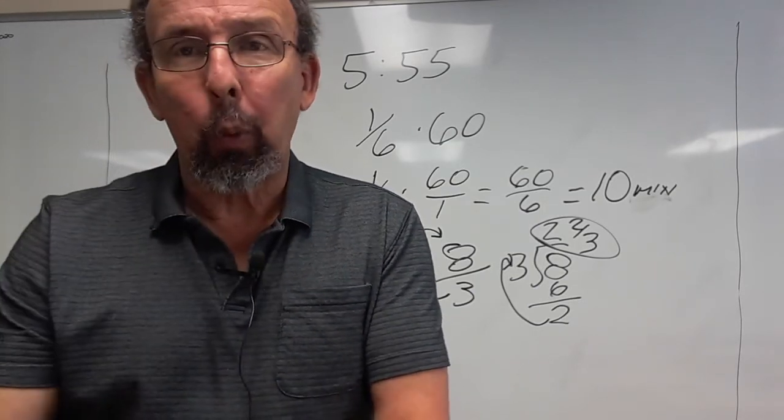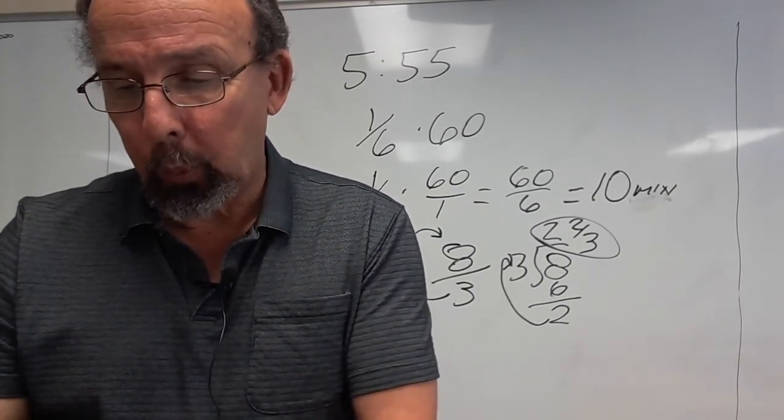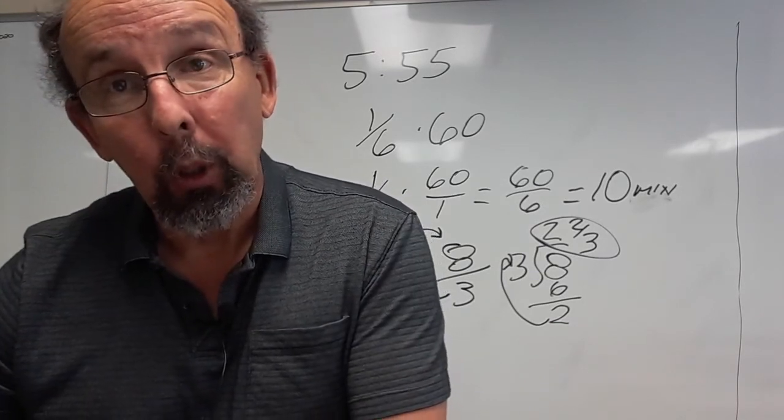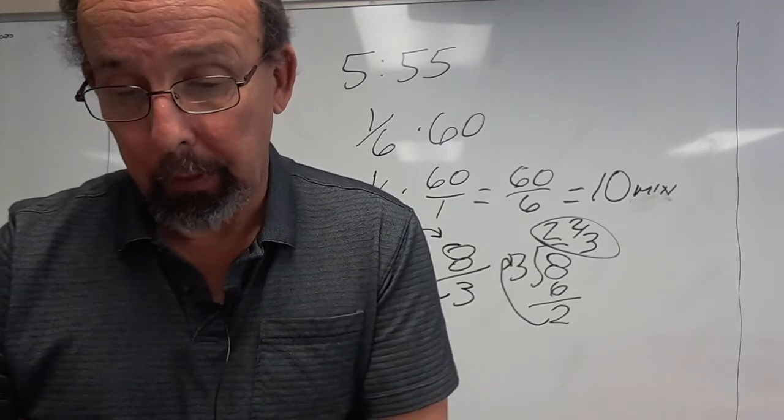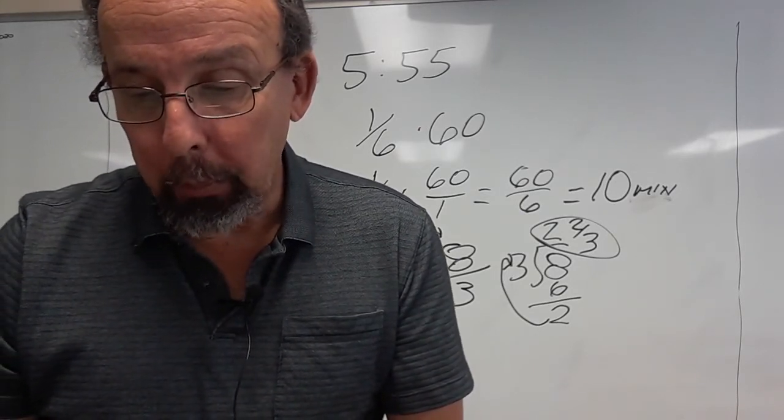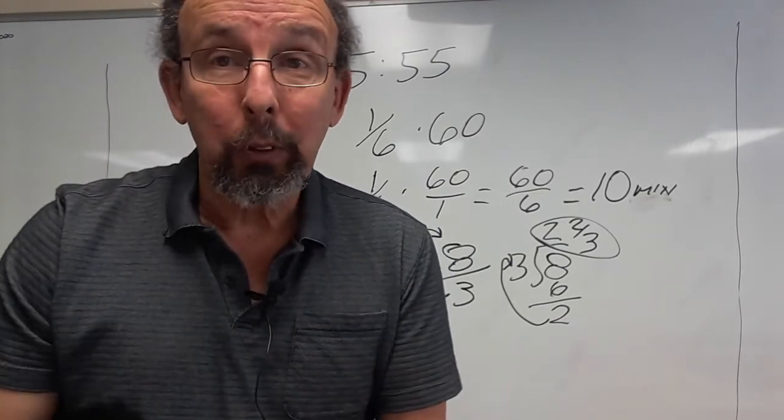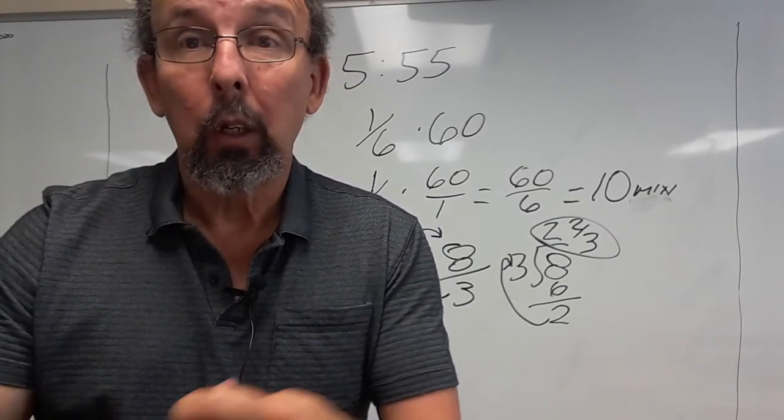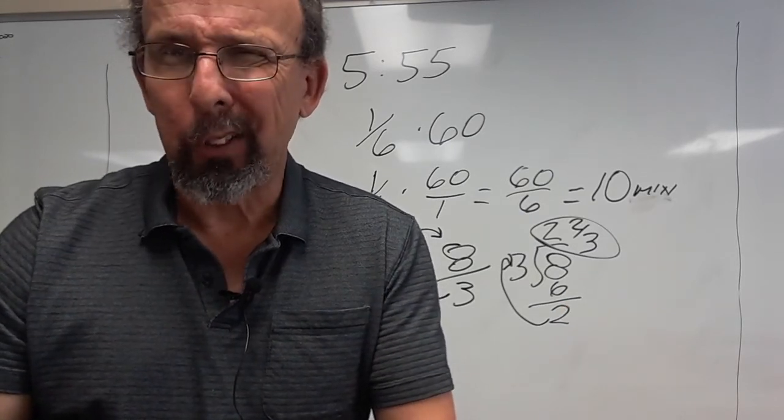Number four, you've got to figure out what the pattern is there. From 137 to 143 to 149 to 155, what's the next number? See what the pattern is. Number five, find the number of hours in the month of January. Well, there's 24 hours a day. Figure out how many days are in January and multiply. Pretty simple.